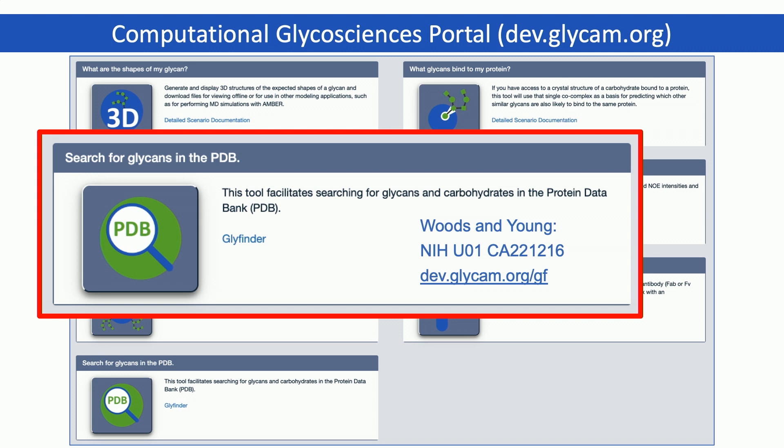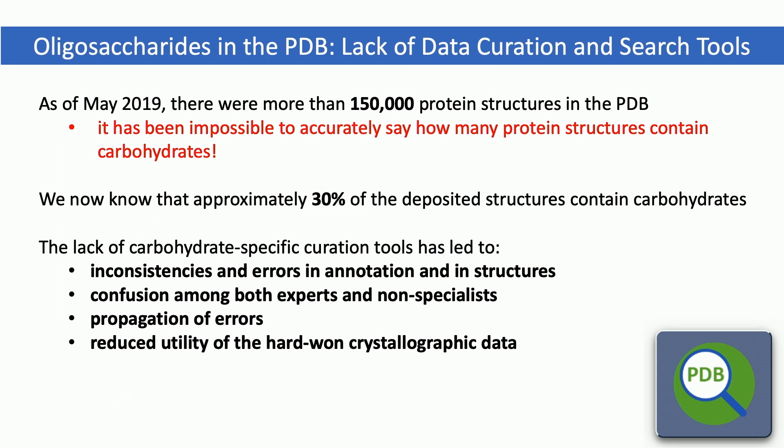The last tool I want to talk about is also developed under NIH funding — a separate grant. This allows users to find sugars in experimental databases, in particular in the Protein Data Bank. When the Protein Data Bank was developed, it wasn't developed with the idea of storing data for sugars — as the name implies, it was to store data for proteins. It's been extremely difficult to locate sugars or to assess their quality. The simple question of how many sugars are in the Protein Data Bank has been unable to be answered until now. It turns out that of about 150,000 deposited structures, 30% of them contain sugars, and because of the lack of tools previously, many of those deposited sugar structures have errors in their annotation or structure, leading to confusion among experts and non-specialists alike, propagating errors in crystal structures, and reducing the value of crystallographic data.